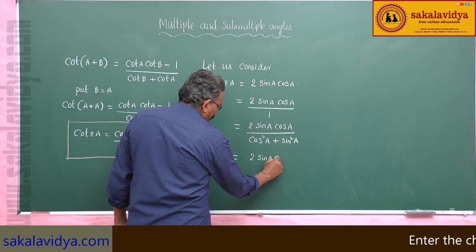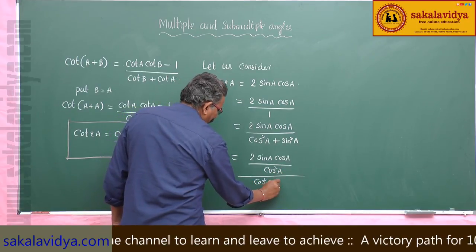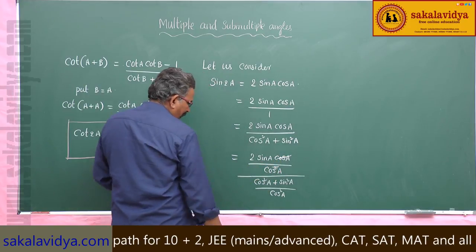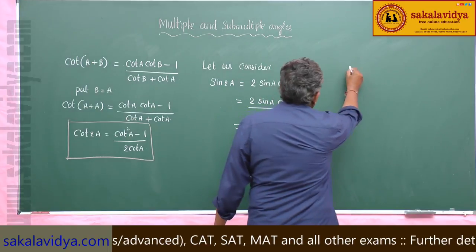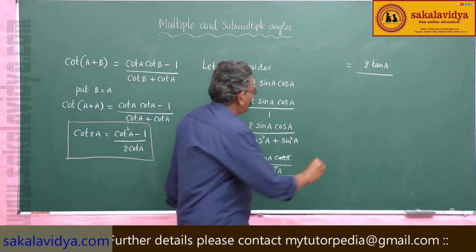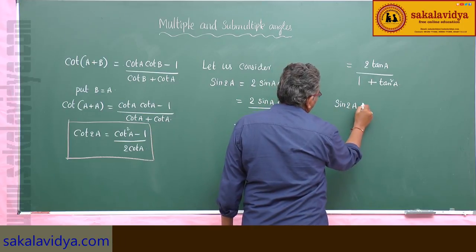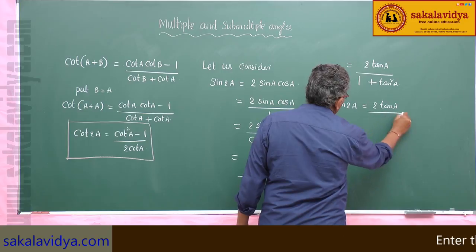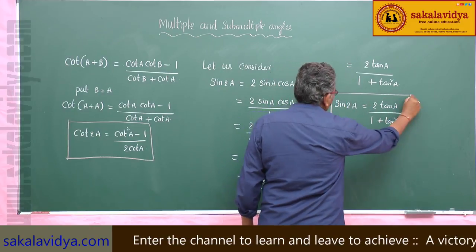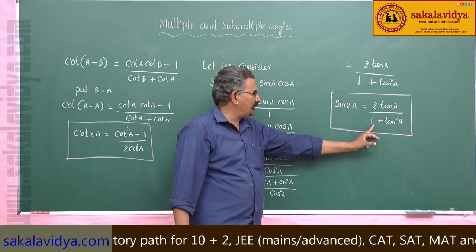Dividing 2 sin A cos A by cos²A — the cos A terms cancel — we get 2 sin A/cos A, which is 2 tan A, divided by (cos²A/cos²A + sin²A/cos²A), which is 1 + tan²A. So the value of sin 2A in terms of tan A is 2 tan A / (1 + tan²A).